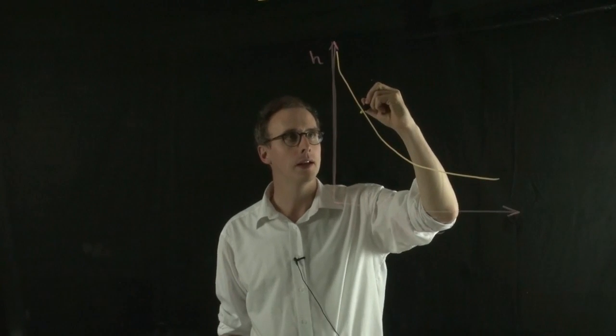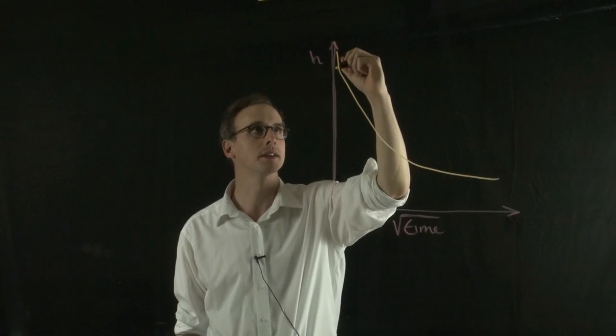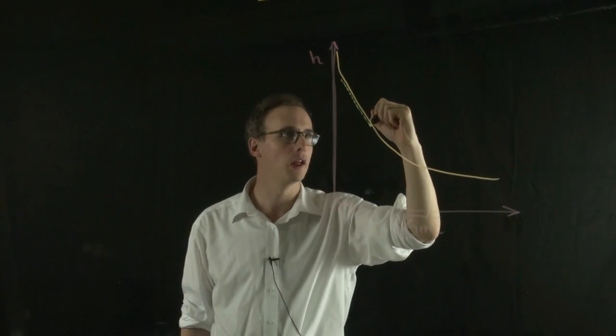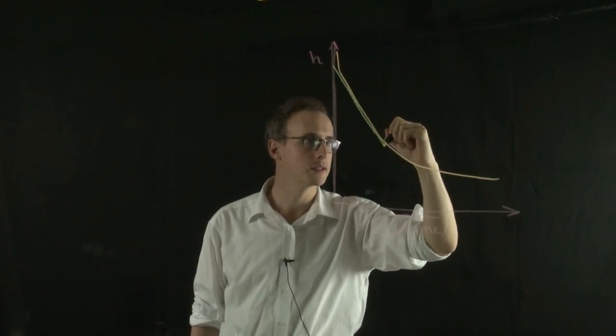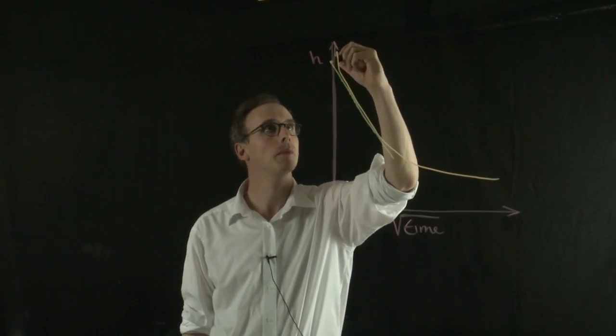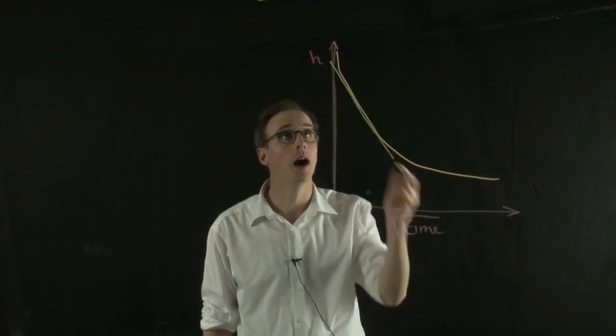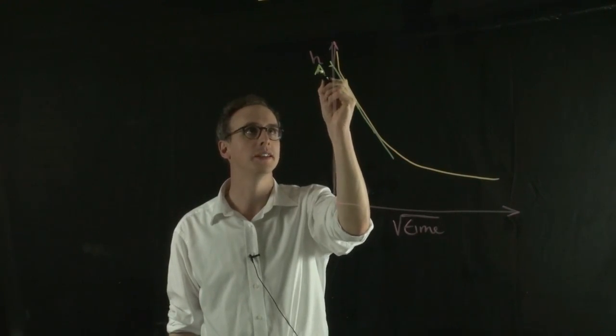And if you then back cast that linear proportion to the y-axis, so if I find the gradient of that and I draw a line that crosses the y-axis, that crosses at point A as an intercept at point A.